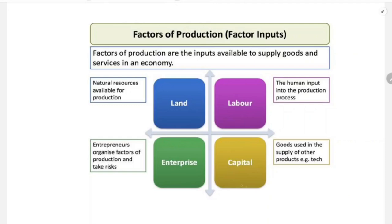The four factors of production are: land, labor, capital, and enterprise. Land means all natural resources available for production — all natural resources are called land in economics. The second factor of production is labor: the human input into the production process.